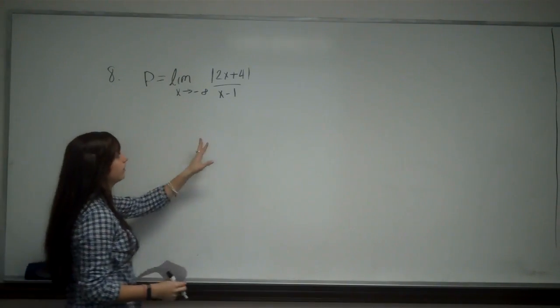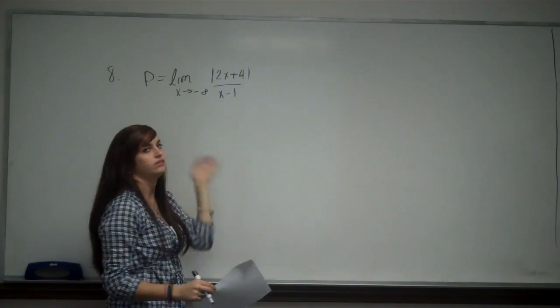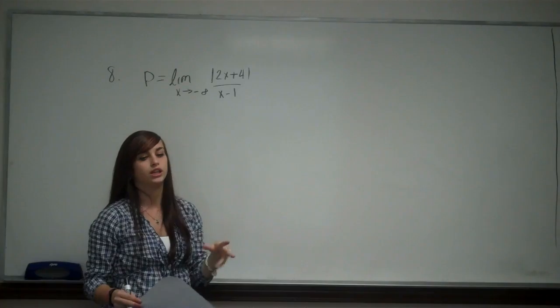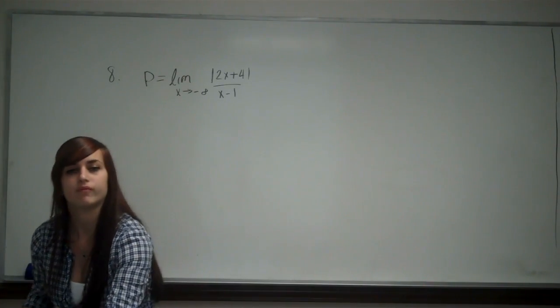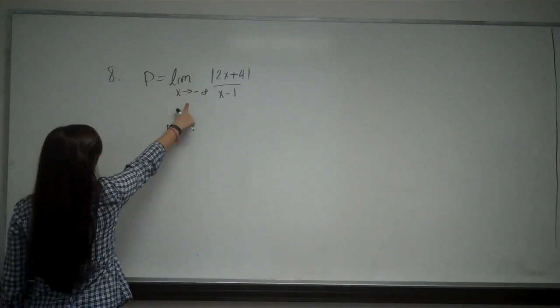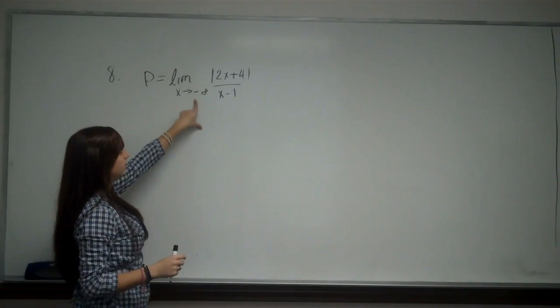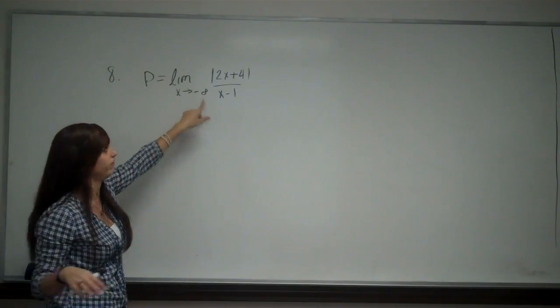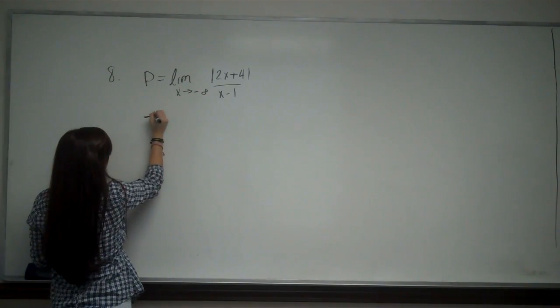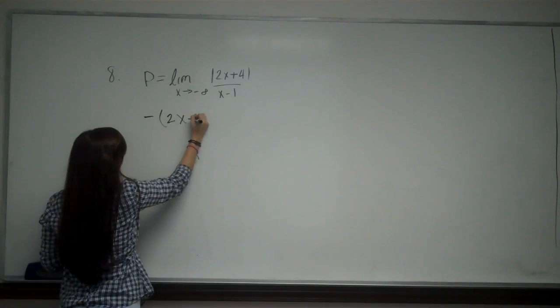So this might look a little confusing at first because of the absolute value signs, and you might not be sure what to do with those. But all you have to do is look at what the limit is approaching. Because the limit is approaching negative infinity, I know I'm going to use the negative of the absolute value.